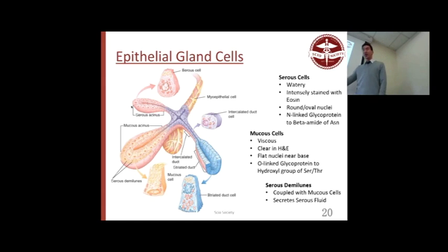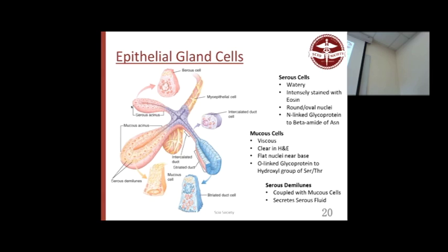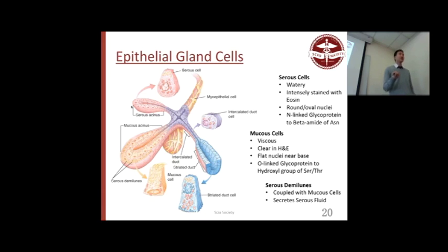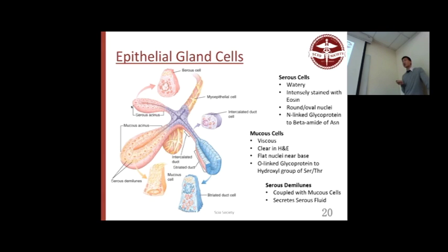Serous cells versus mucus cells: serous cells are intensely eosinophilic — very pink-stained — because they have a lot of granules. Mucus cells appear pale and clear because they have vacuoles of glycoproteins that don't get stained. So on a conference exam, if you see a very pink secretory cell it's serous; if it's clear, it's mucous. Know the difference — serous is intensely stained, mucus is clear.